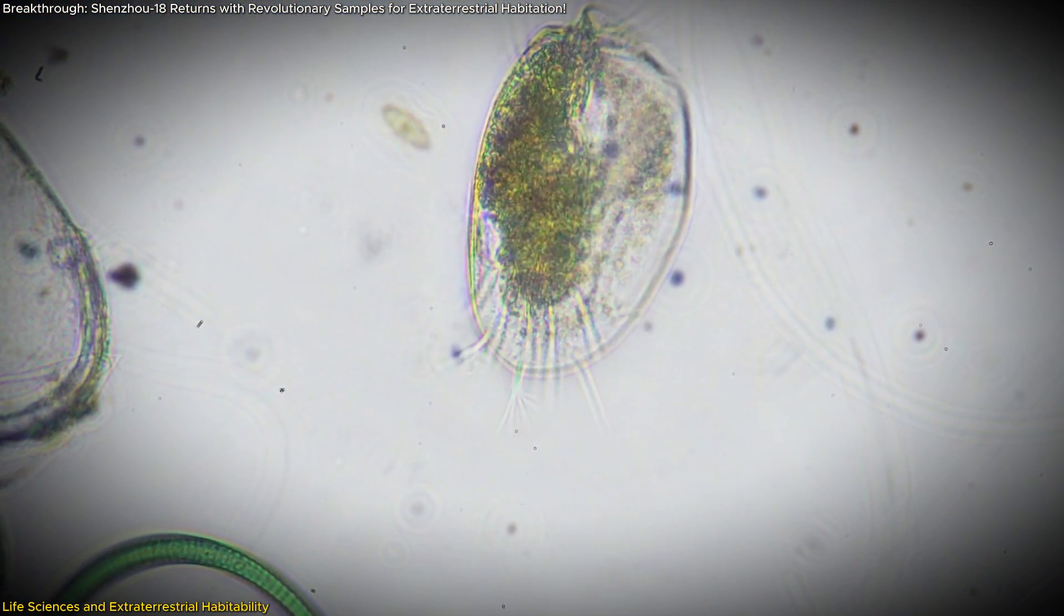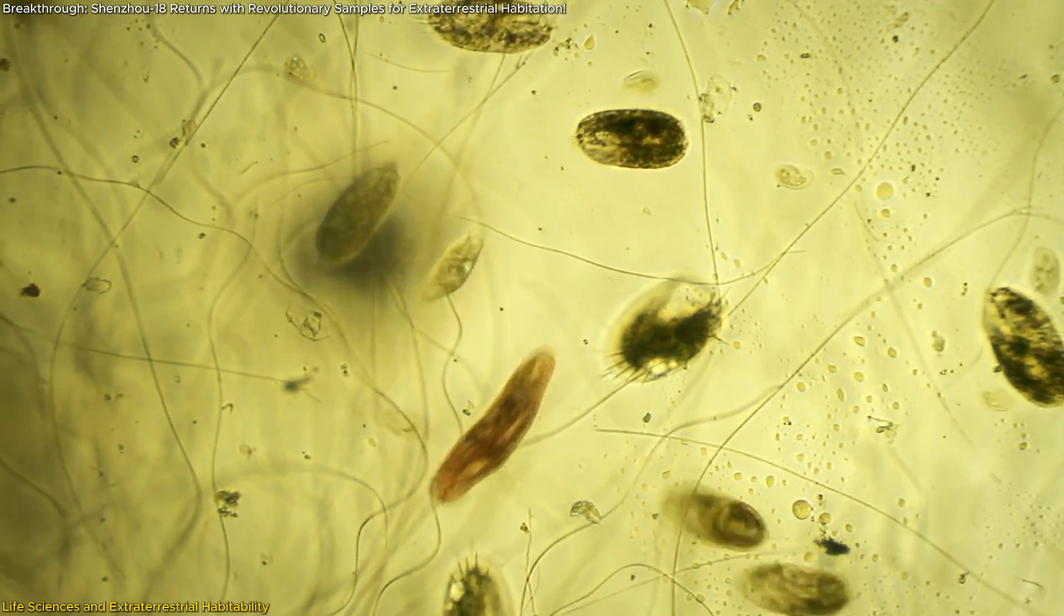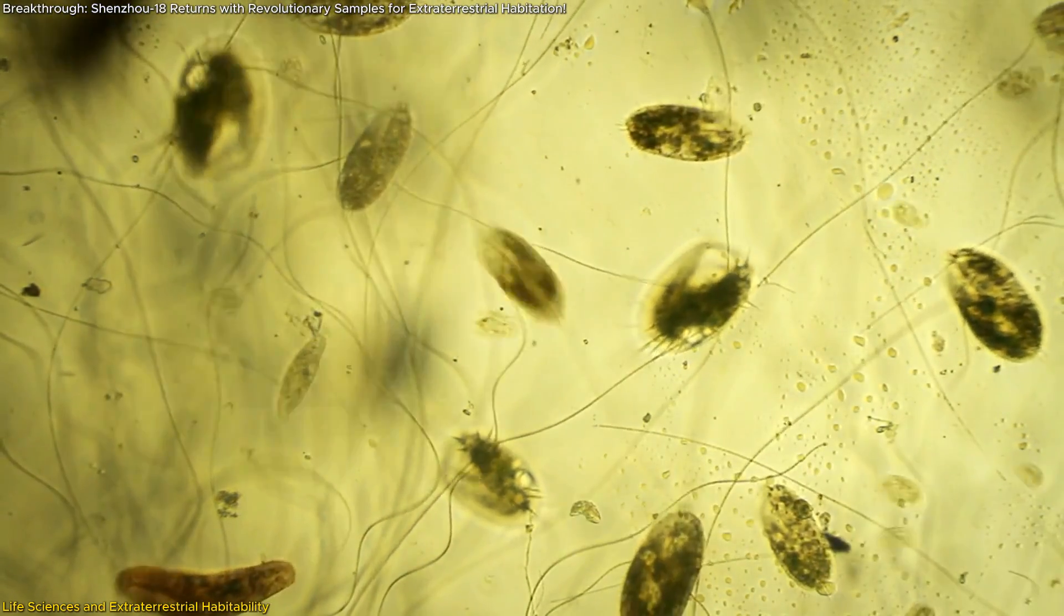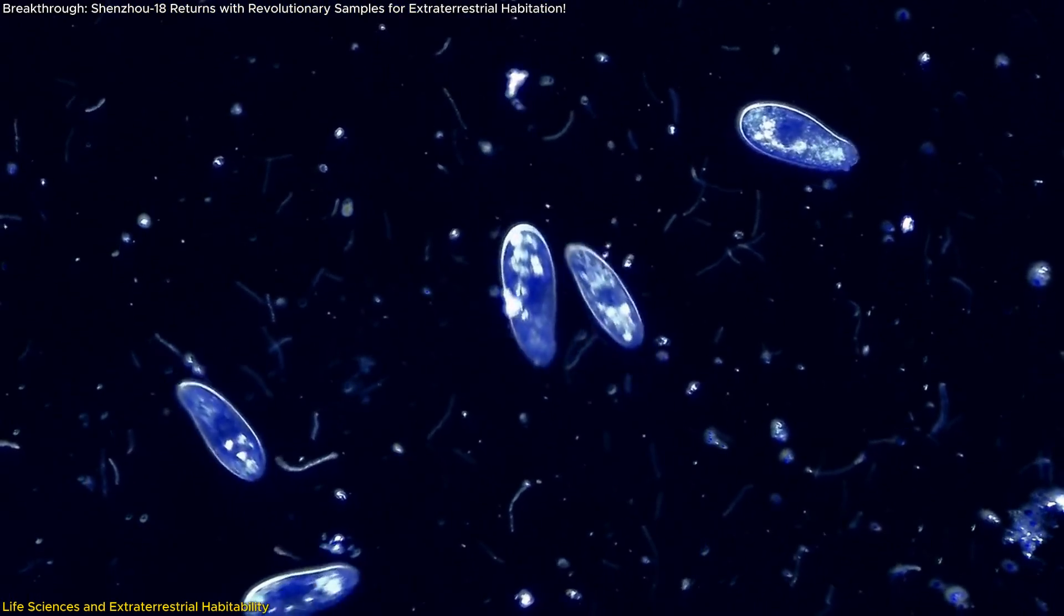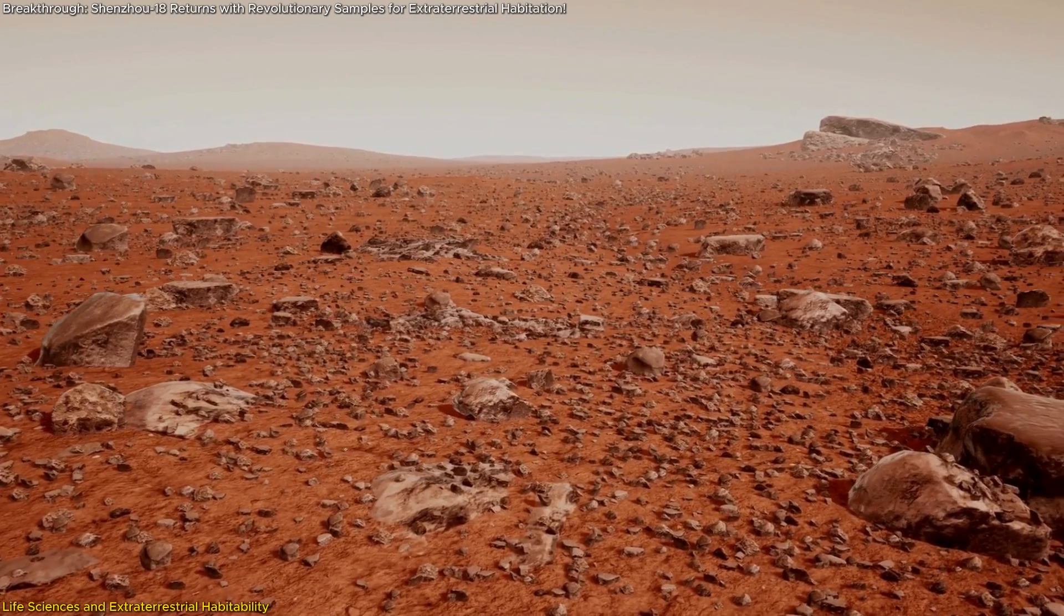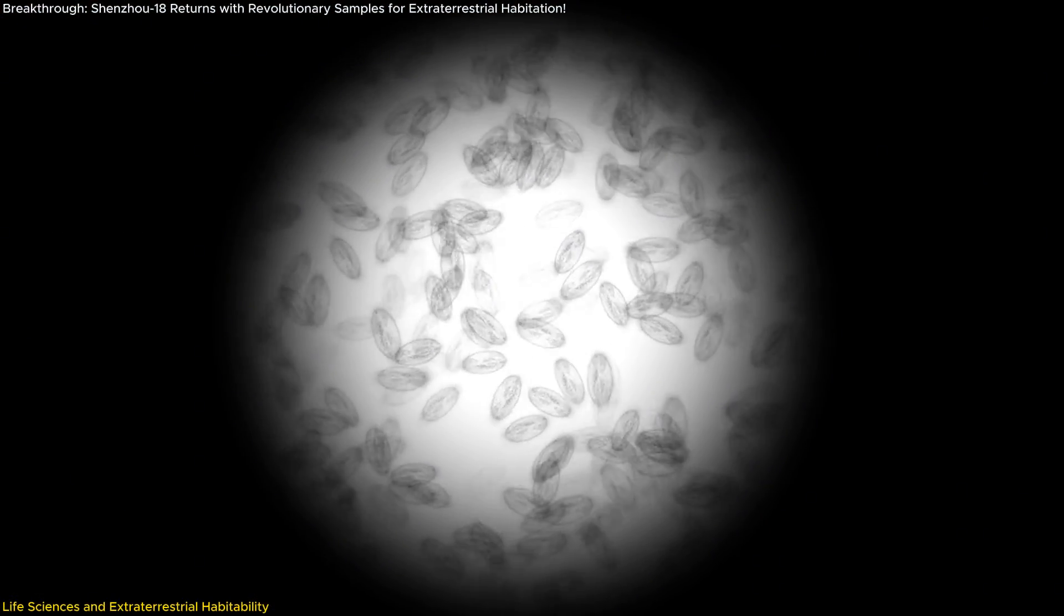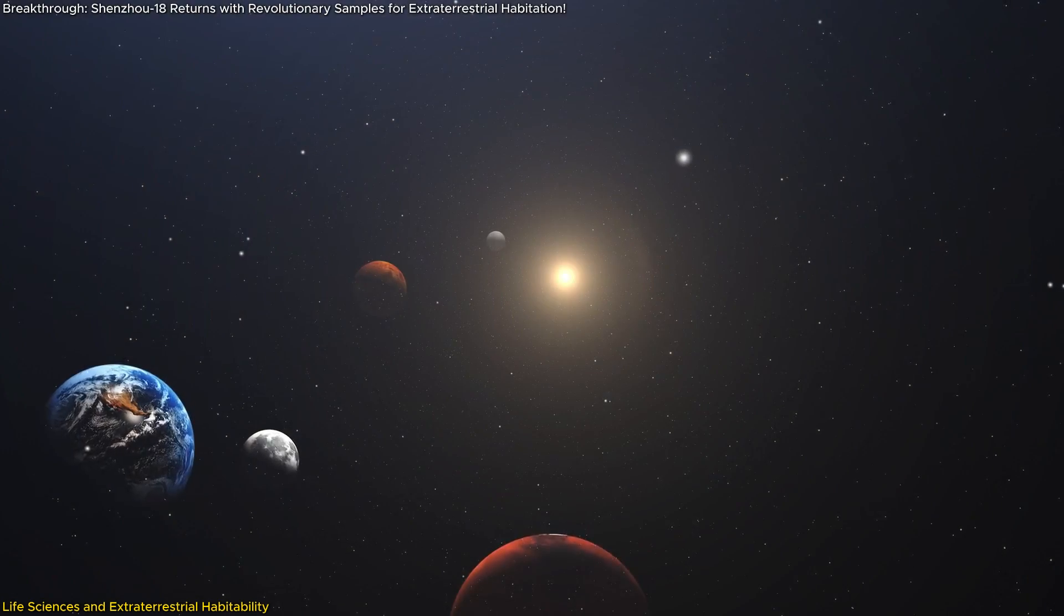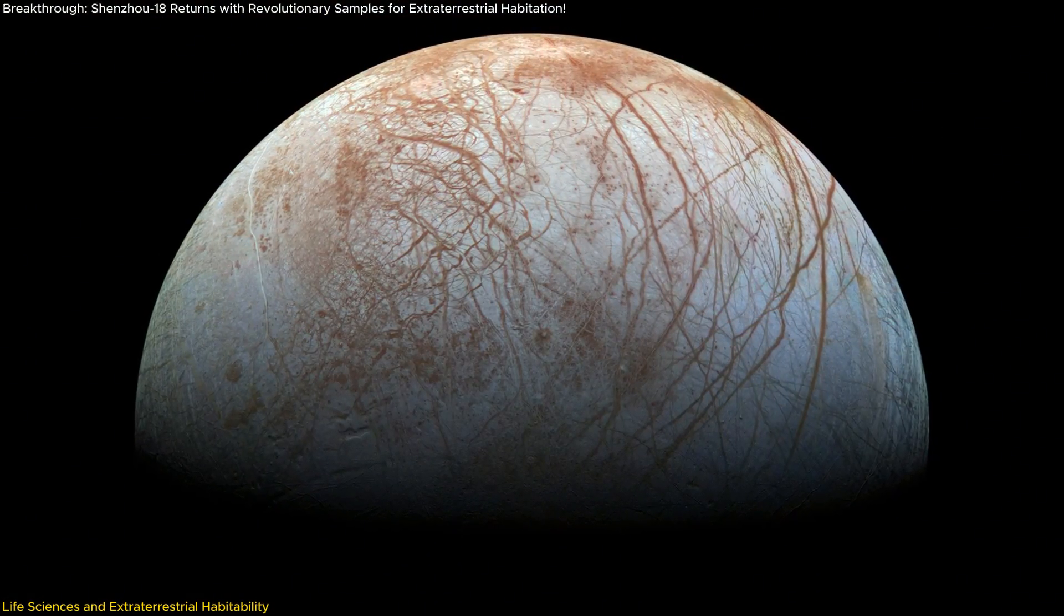The rock-dwelling microbes add another layer of insight. These organisms live within rocks and have adapted to thrive on minimal nutrients. Studying their survival in the challenging conditions of space may reveal how life could potentially endure on planets with rocky, nutrient-poor surfaces. This adaptability hints at the possibility of microbial life existing below the surfaces of other planets or moons, such as Mars or Europa, where conditions might support life underground.